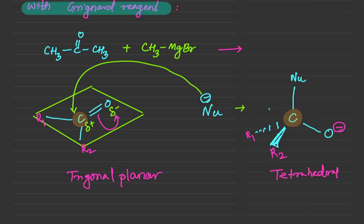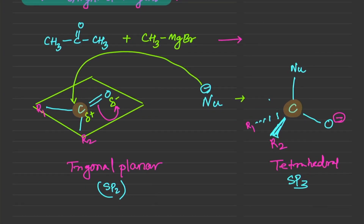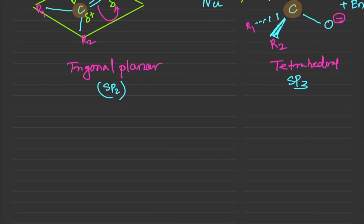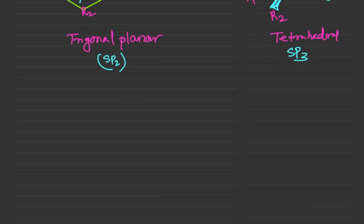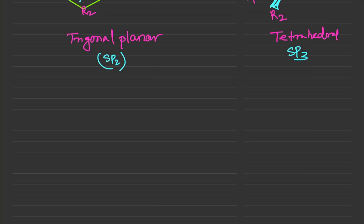The starting carbonyl was sp2 hybridized, but the intermediate carbon is sp3 hybridized — this is called the tetrahedral intermediate. Regarding stereochemistry, you can have two enantiomers of this product. For our first example, we will ignore stereochemistry since there is no stereocenter.